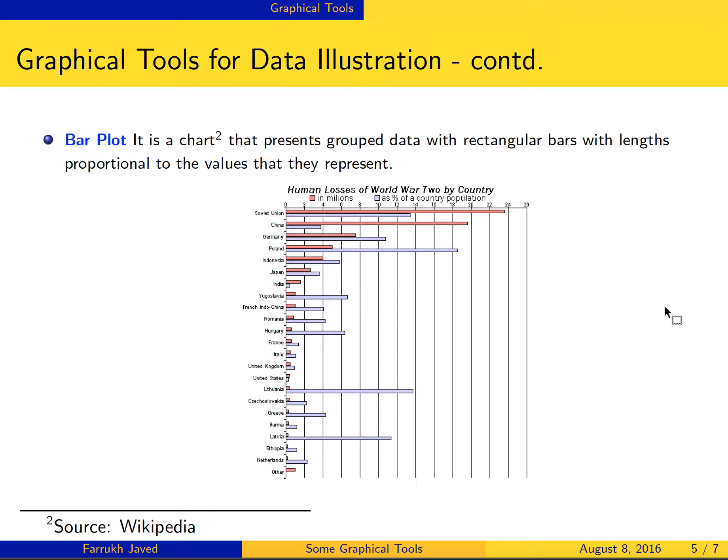Each variable has two categories: losses in millions and losses as percentage of country population. Red shows losses in millions, blue shows the percentage of country population. The length of those bars represents how big the losses are. Soviet Union, as we know from history, lost a lot in millions and also in terms of population of their country.